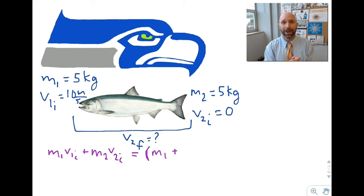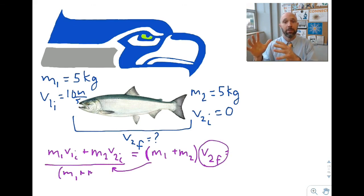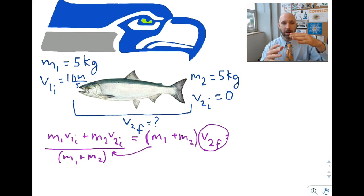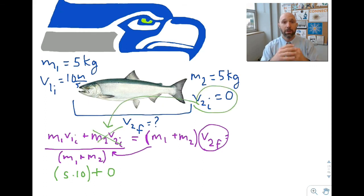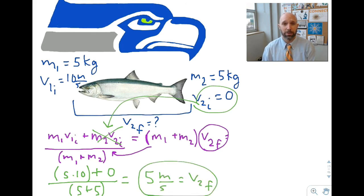The formula for an inelastic collision for conservation of momentum is shown there. We're looking for the second velocity at the end, final, combined. We can divide both sides by their combined masses. That gives us five times 10 plus a zero, because the fish is not moving, divided by their combined five plus five. So 50 divided by 10 is five meters per second. And there you have it, conservation of momentum and the Seahawks.